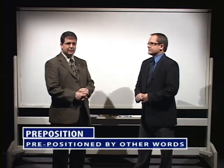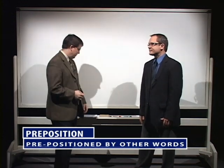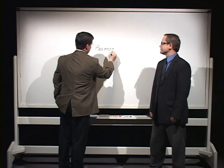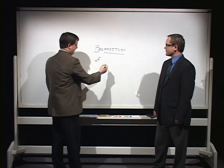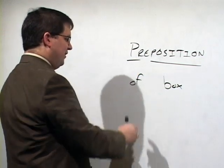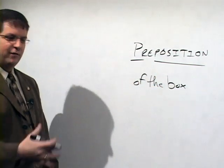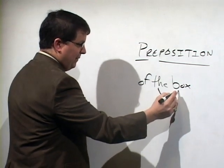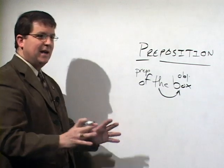Prepositions, like the name would indicate, are words which are prepositioned before other words so that they can help to serve as a part of speech. An example of a preposition would be a word like 'of.' The word it has prepositioned before might be the word 'box,' so the preposition would be 'of,' the object of the preposition would be 'box,' and then you might have a word like 'the' that helps to fill the prepositional phrase 'of the box.' This would be an adjective modifying 'box,' and 'box' would be the object of the preposition.